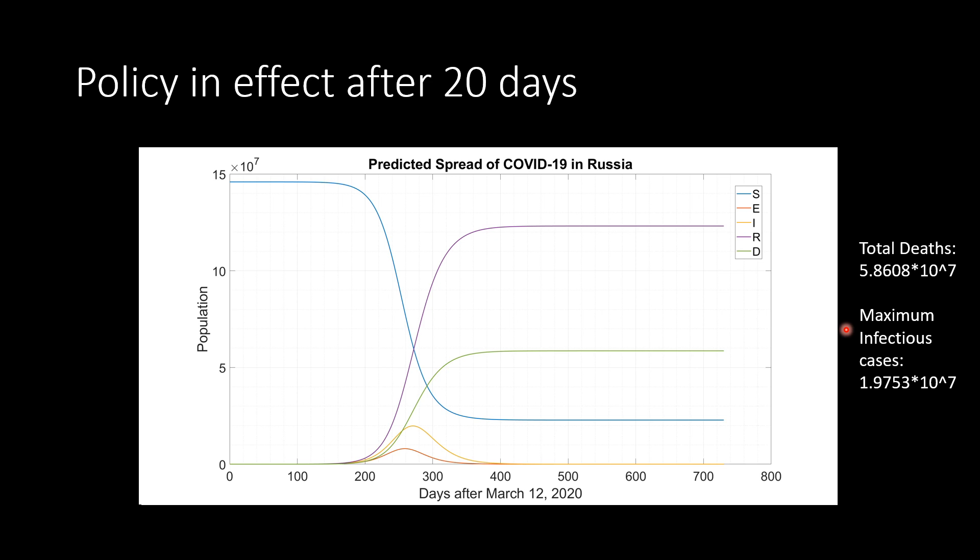If the policy effect takes place 20 days after the outbreak, then the effects were so great that I had to look at a span of two years instead of one. The slowed effects of the outbreak would be great for any country as there is more time to develop a vaccine. Furthermore, by comparing the number of total deaths, we see that the early policy effect had saved more than 10 million lives in this simulation.